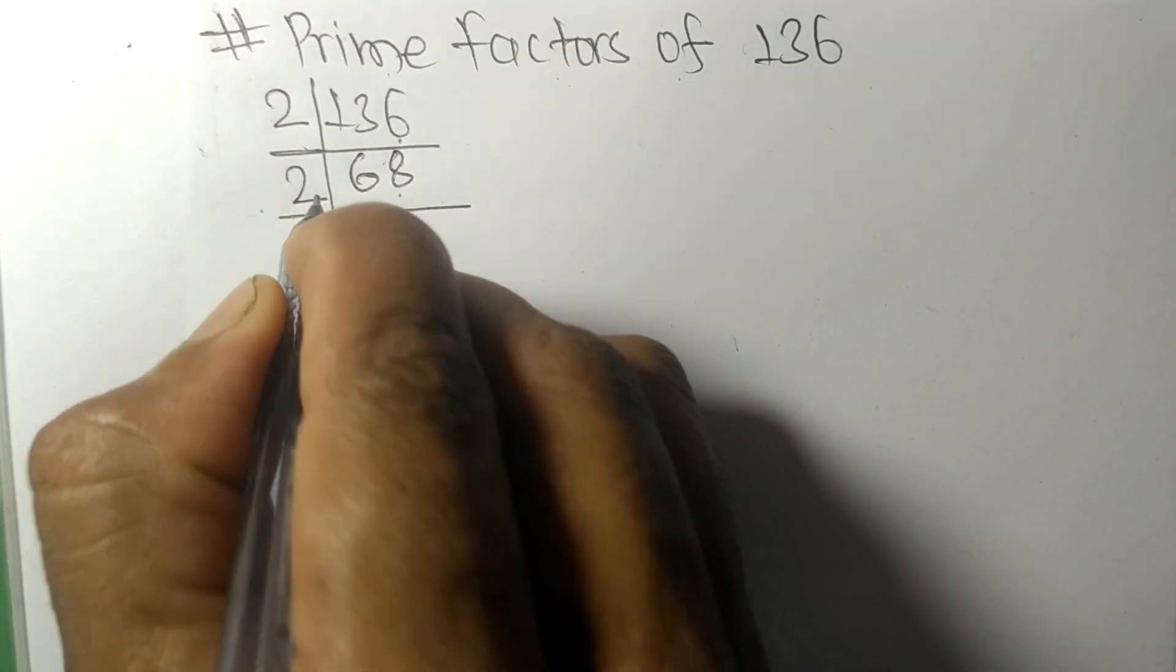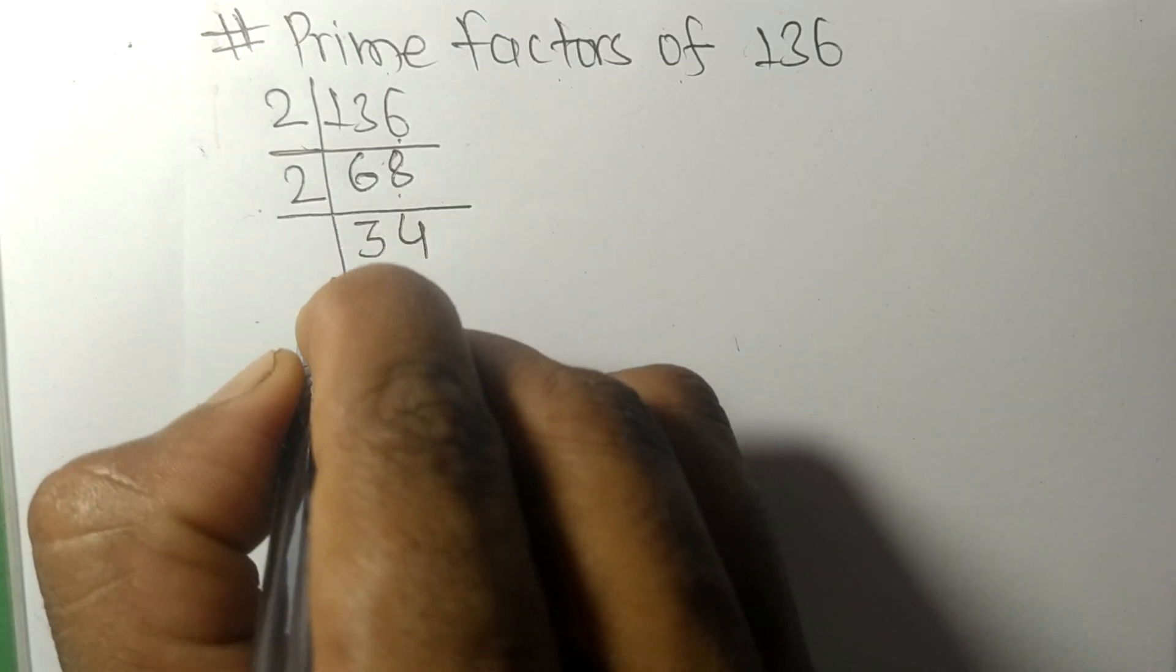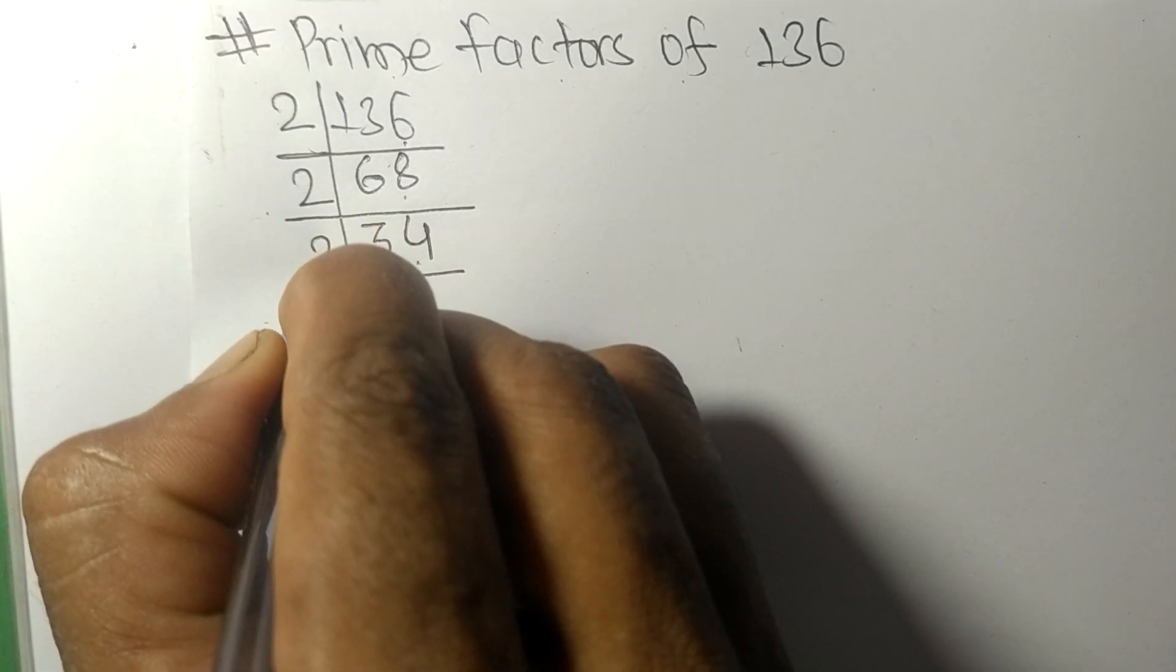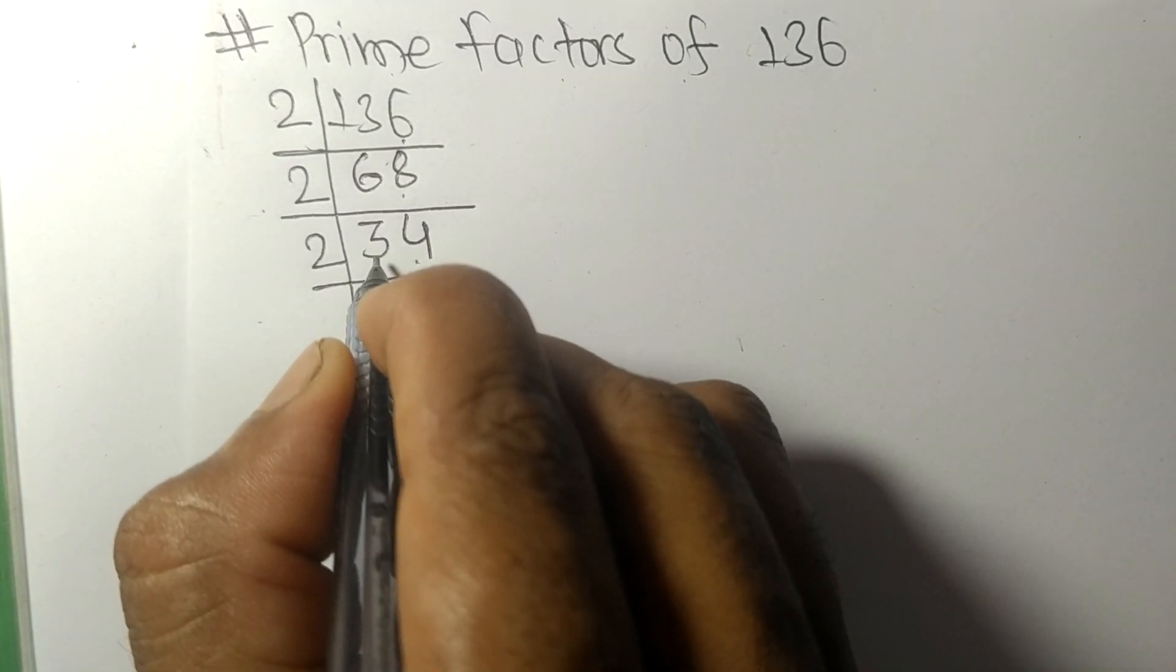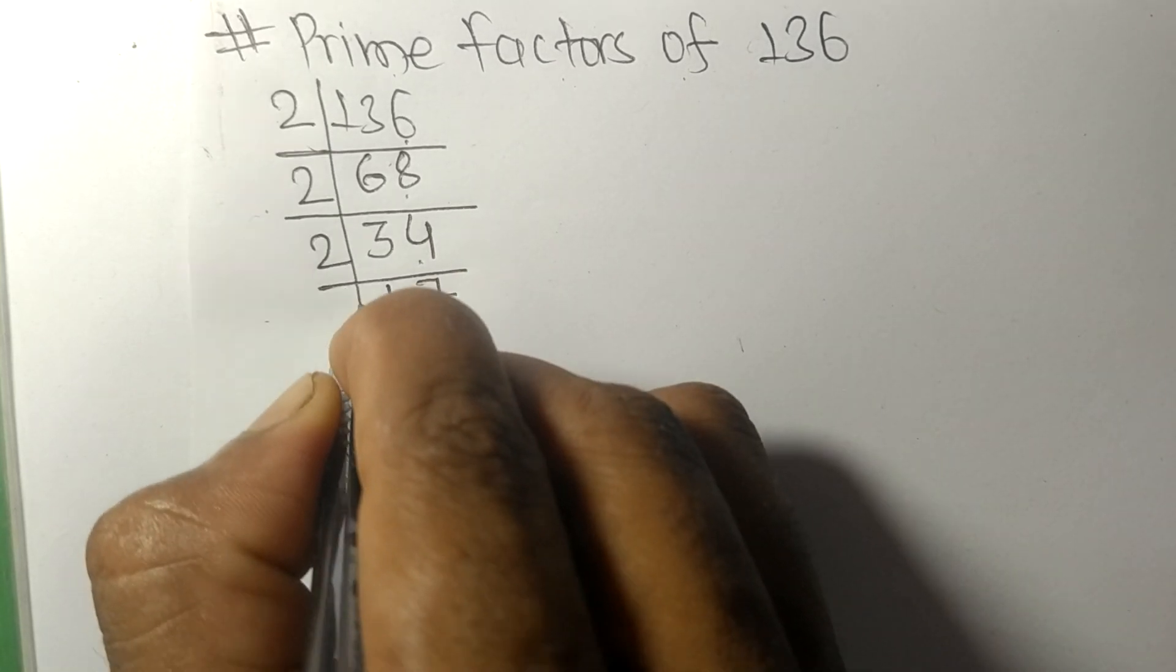Again, even number 4, so divisible by 2. 2 times 17 equals 34.